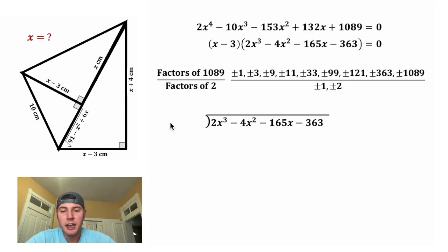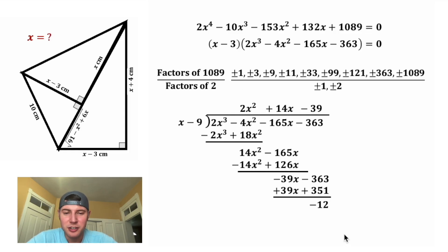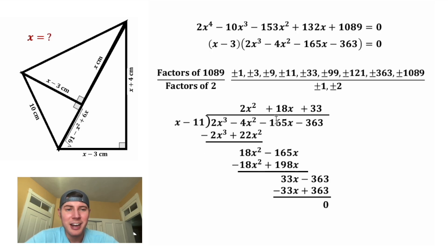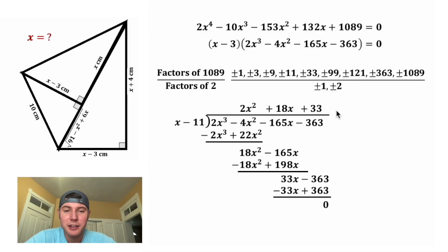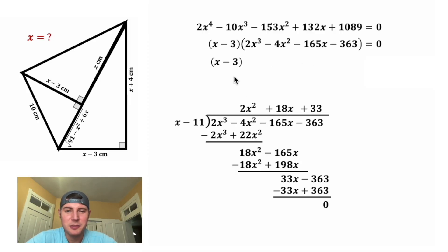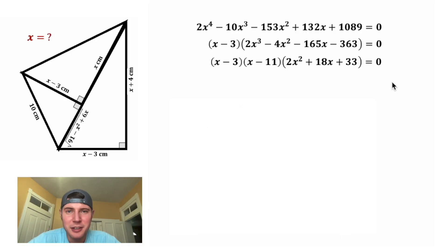We'll do another long division. This time let's try x minus 9 — after the division it has a remainder, so x minus 9 is not a factor. Next let's try x minus 11 — after the long division we do have a remainder of 0, so x minus 11 is a factor. Now that we have it broken down to a quadratic, we no longer need to guess factors. Bringing down the (x minus 3), this expression equals (x minus 3) times (x minus 11) times the remaining quadratic, all equal to 0.